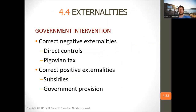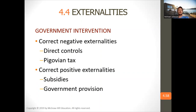The government can correct negative externalities through taxation — for example, a carbon tax is used to bring pollution down to a more efficient level. Positive externalities are corrected through subsidies — for example, they subsidize public transit because it would be underproduced in the private market, so subsidizing it ensures enough is produced.